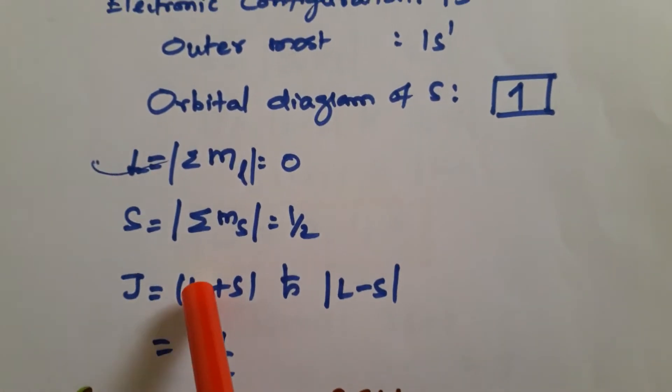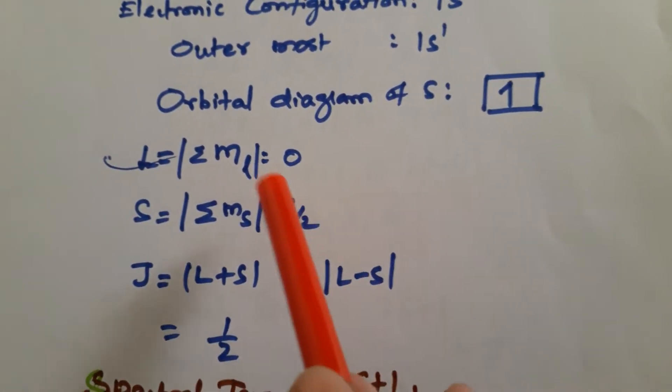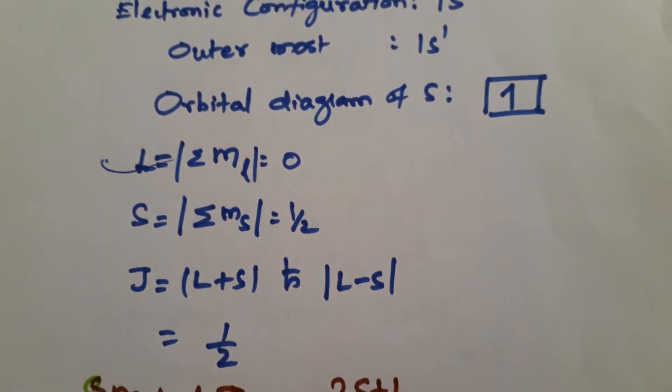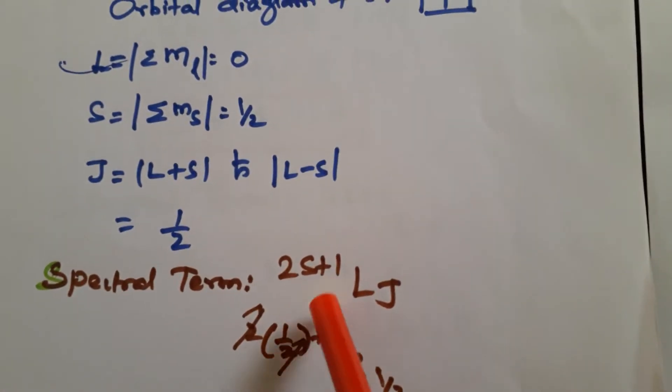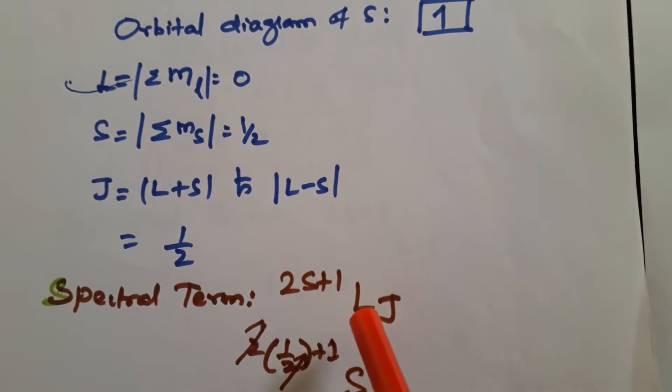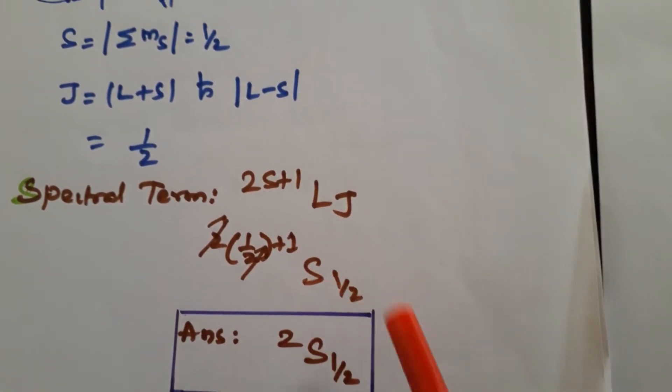And J value, formula for the J is L plus S to L minus S. Since it is only one electron, so directly I have taken this 1/2. The spectral term formula is this: 2S+1, L, J. If you substitute it, we will get this one.